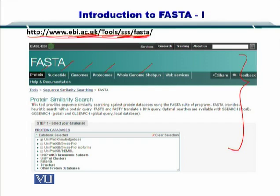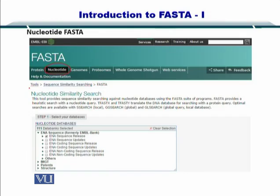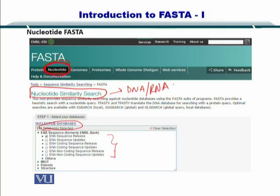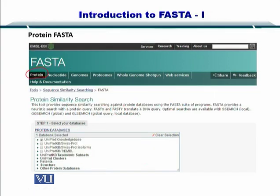You can do a protein similarity search if you click on proteins. Similarly, if you click on nucleotides, then you have the nucleotide similarity search, which includes both DNA and RNA sequences. Here you can select the database from which you want to obtain sequences for comparing your query. You can also do a protein similarity search; the difference will be that the databases will be UniProt KB or SwissProt.